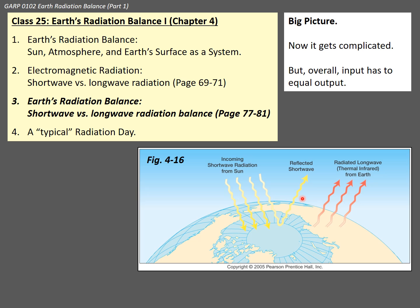Bringing this all together is a little complicated, but you can always go back to the same basic starting point. All of this is really because we cannot just receive heat from the Sun — that can't be the end of the story. We have to send the exact same amount of heat back into space. Otherwise, there would be no stable temperature on the planet; the Earth would just get hotter and hotter.